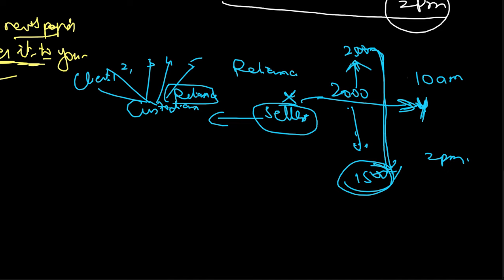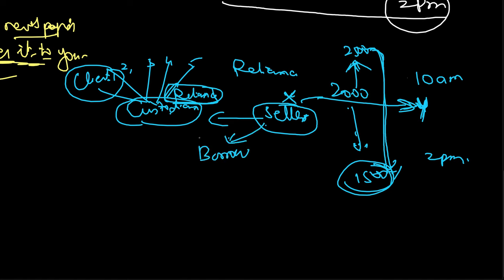These long-term investors hold Reliance but are not doing anything with it. They would have entered into an agreement with the custodian that if anybody wants to borrow Reliance — just like we borrow cash when we urgently need it and repay later — shares can be borrowed and lent too. Under such an agreement with Client 1, the custodian can facilitate this deal. The custodian gets fees, and Client 1 also gets a benefit for lending the shares.